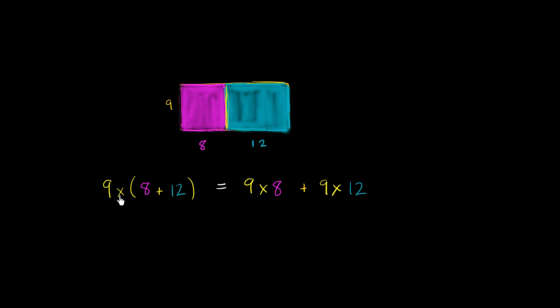You see, when 9 times the sum of 8 plus 12 is equal to 9 times 8 plus 9 times 12, we essentially have distributed the 9: 9 times 8 plus 9 times 12.